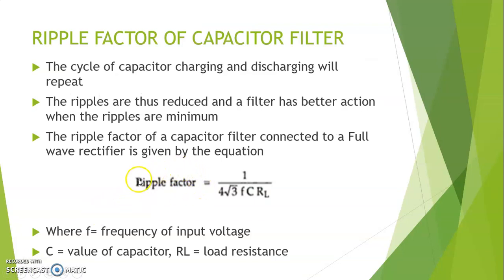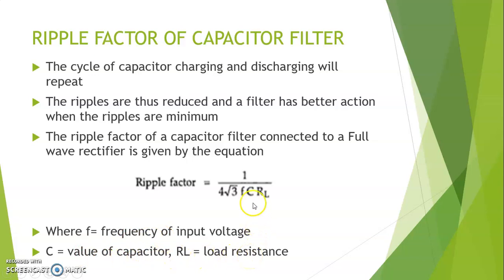There is a term called the ripple factor, which is used to find the amount of AC present in a waveform. For a full wave rectifier or bridge rectifier, it is given by 1 divided by 4√3·F·C·RL, where F is the frequency of the input voltage, C is the capacitance, and RL is the load resistance. When the values of C and RL increase, the ripple factor decreases, because it is inversely proportional to both.